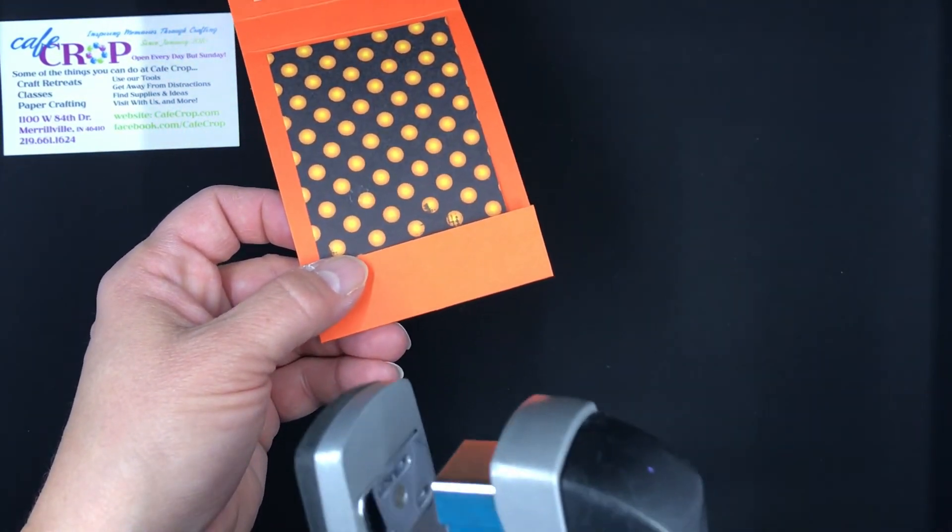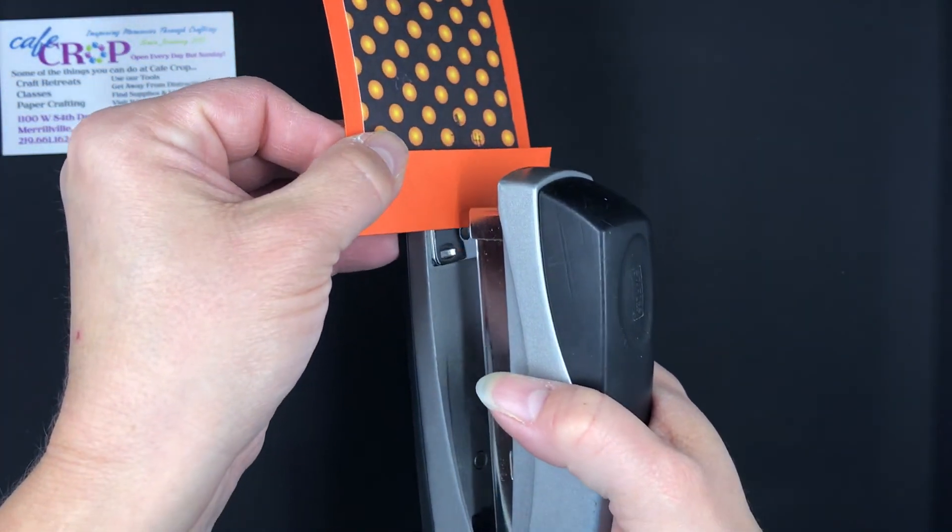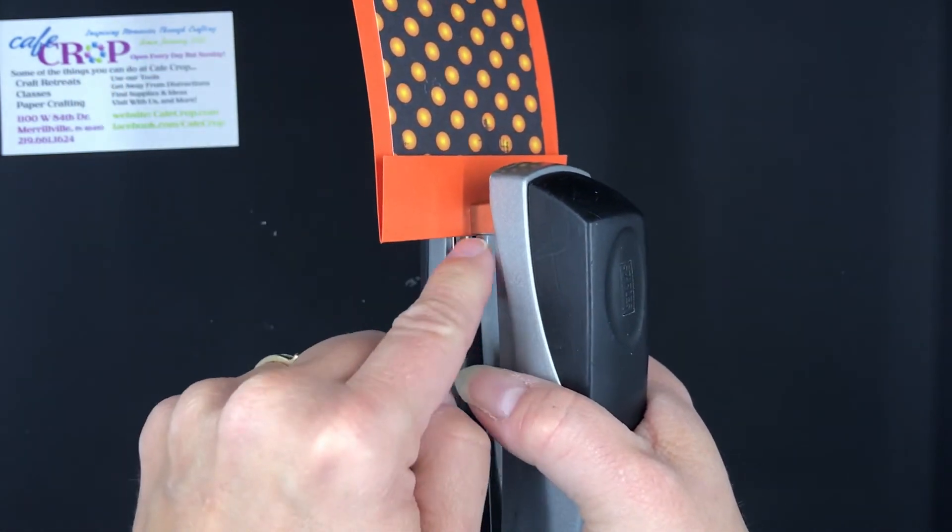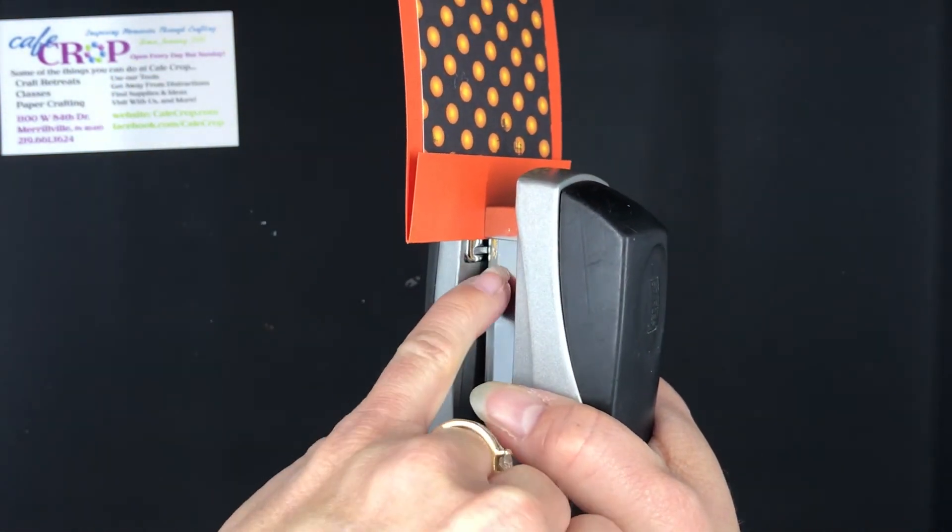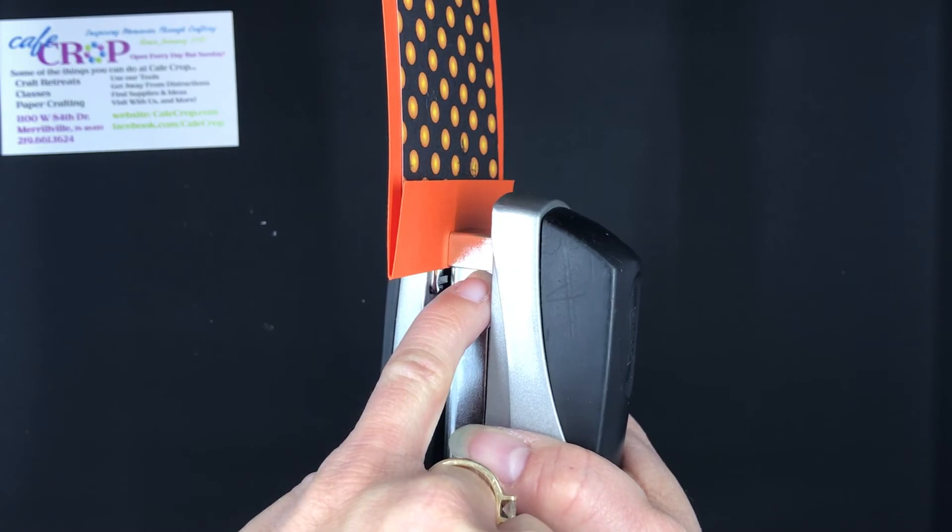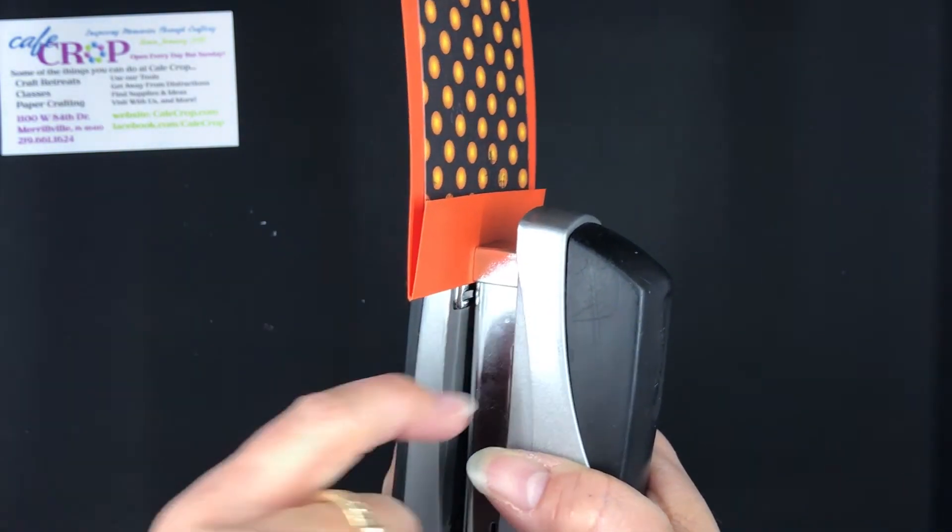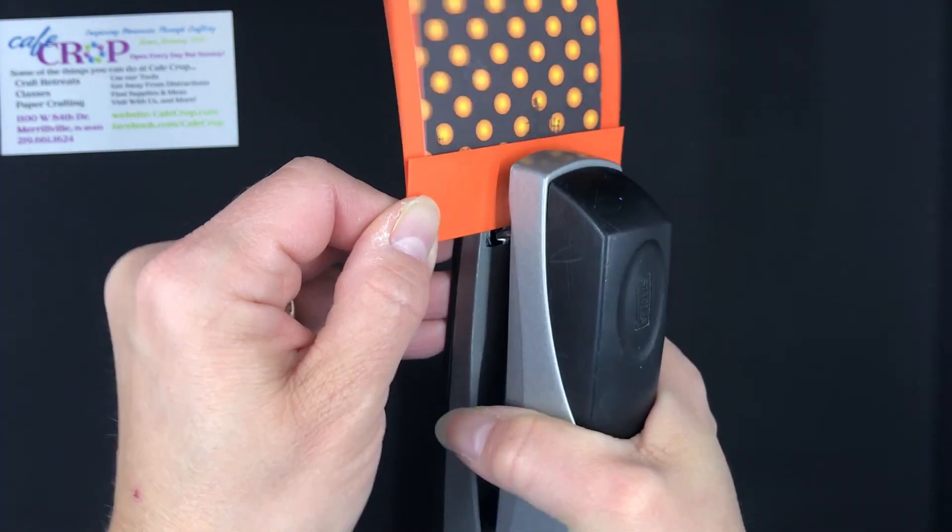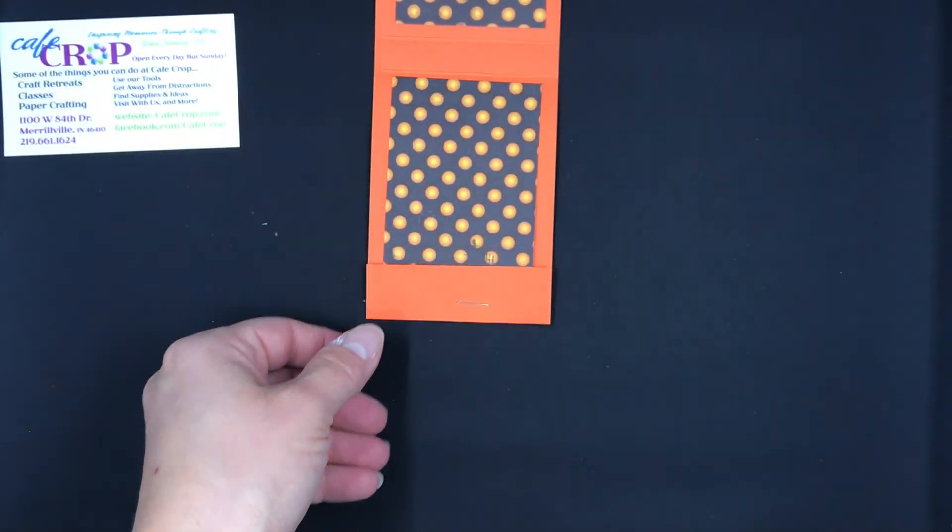What I'm going to do now is just take a stapler, just a regular stapler, and I'm putting it in just about a quarter of an inch. Now on mine it was about the width of this part of the stapler. You can kind of figure out on your stapler what works best, and all I need to do is add my treat.